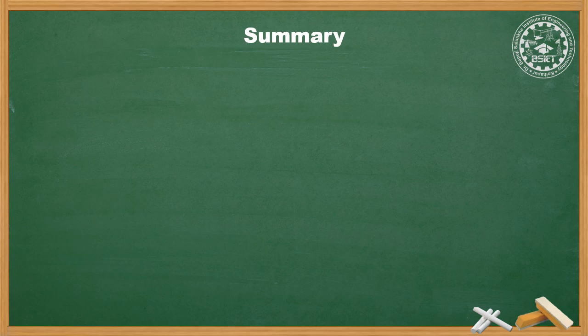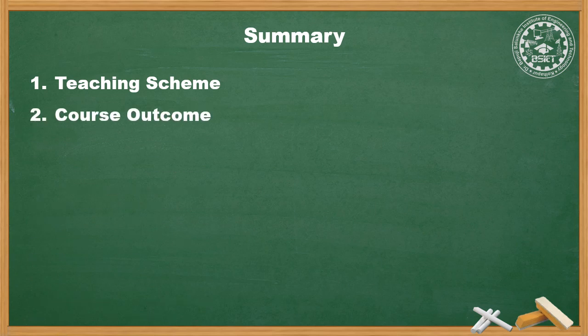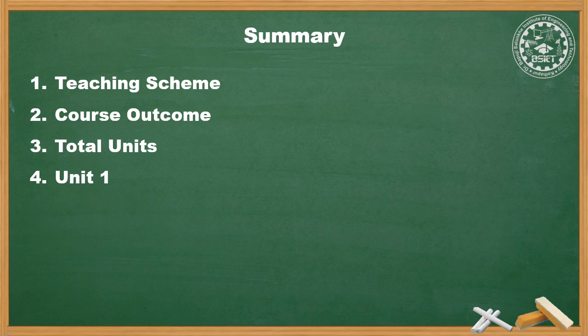Let us quickly summarize what we have learned in today's session. Number one, teaching scheme: the I scheme has a 70-30 scheme — 70 marks written paper and 30 marks for class test and micro project, plus 25 marks for external practical examination and 25 marks for practical progressive assessment, totaling 150 marks. Second, course outcomes for this subject were discussed. Third, there are 5 units with a very vast syllabus. Fourth, an introduction to Unit 1 — Internal Combustion Engine — covering various engine components and engine terminologies. Hope you like the video. Thank you.